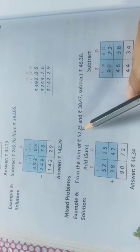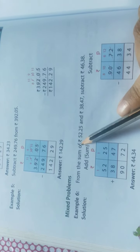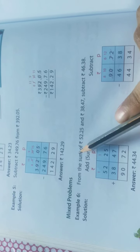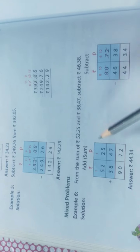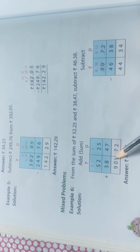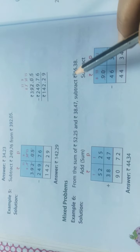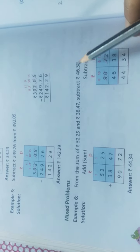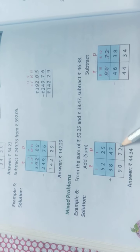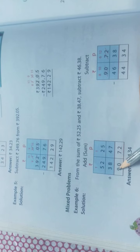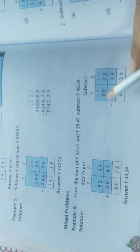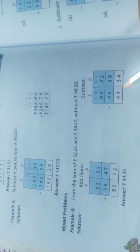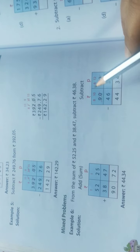First you have to add, since it says 'from the sum of' — sum means you add. Add 52 rupees 25 paise and 38 rupees 47 paise; you get 90 rupees 72 paise. Then subtract 46 rupees 38 paise from this sum — 90 rupees 72 paise. If the numbers at the top are smaller than those at the bottom, carry forward.